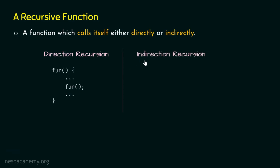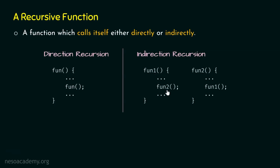The second type is indirect recursion. In indirect recursion, the function does not call itself directly. The function fun1 is not calling itself directly within its own body, but it is calling some other function — fun2. In turn, fun2 is calling the function fun1 within its own body. So fun1 is calling itself indirectly: it calls fun2, and fun2 calls fun1. A function which calls itself, either directly or indirectly, is what we call a recursive function.